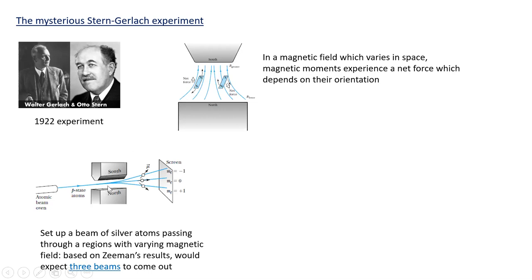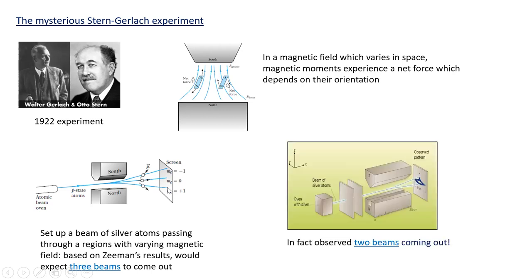In a space-varying — also called inhomogeneous — magnetic field, the orientation of the magnetic moment causes a physical force which will separate those magnetic moments and the atoms carrying them. Stern and Gerlach set up an atomic beam of silver atoms passing through such a region with a varying magnetic field. Based on Zeeman's results, for an l = 1 state we'd expect three beams: one for m_l = −1, one for m_l = 0, and one for m_l = +1. But what was actually seen was two beams coming out.